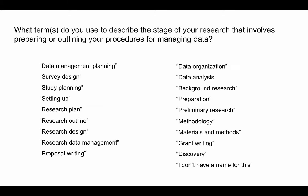At CDL we did an informal survey where we asked researchers about the words they use to describe the various parts of their research process — specifically, what terms they use to describe the stage involving preparing or outlining procedures for managing data. They gave us a wide variety of responses. A couple said 'data management planning' and 'research data management,' but those are probably librarians. There's a huge variety, and looking at this reveals not only terminology differences but also differences in perspective. My favorite response was simply: 'I don't have a name for this. It's just a thing that I do.'